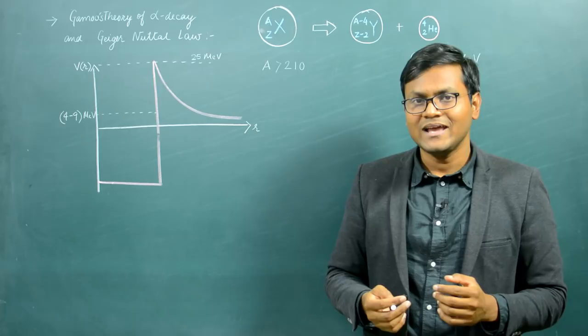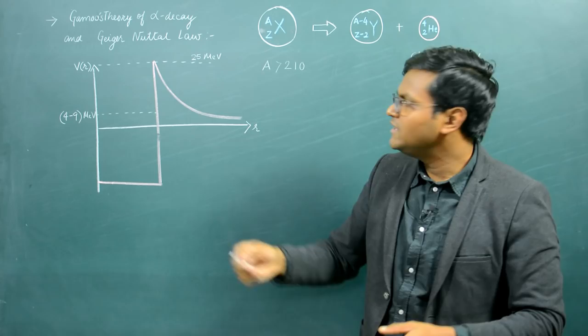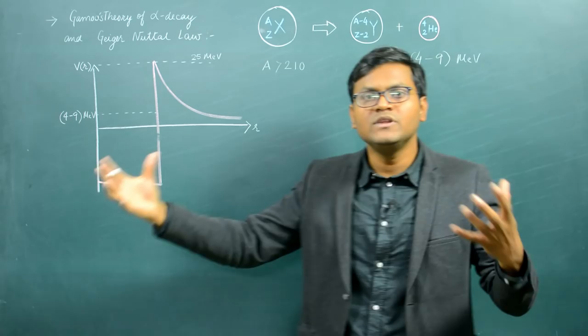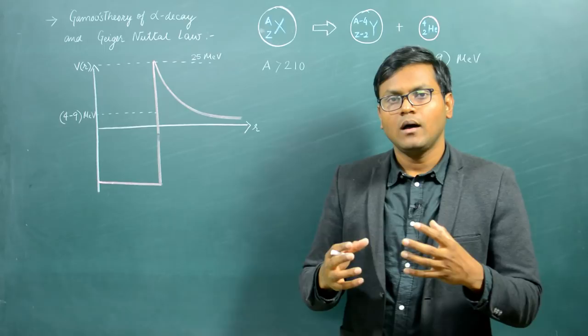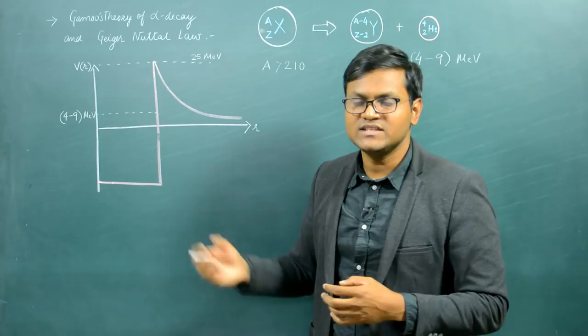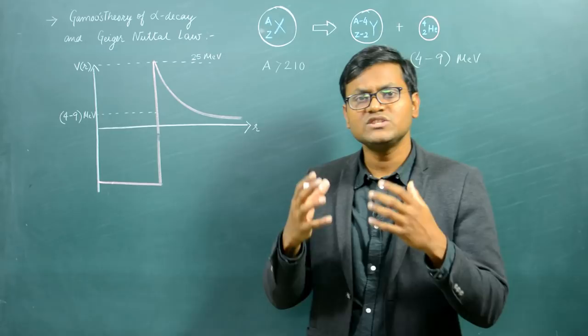The alpha particle stuck inside the nucleus has kinetic energy much less than the potential barrier height. How can it escape? This is quite puzzling. The only explanation comes from what is known as quantum tunneling. Classically, we cannot explain this behavior, but there is an explanation from quantum physics known as quantum tunneling.